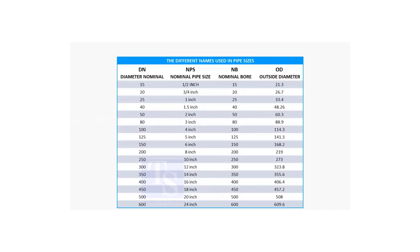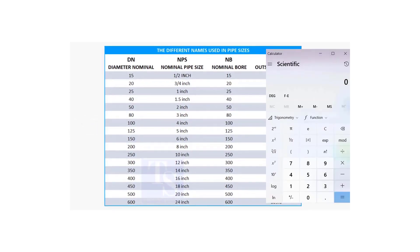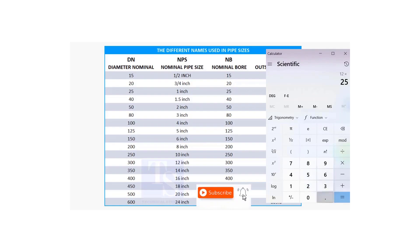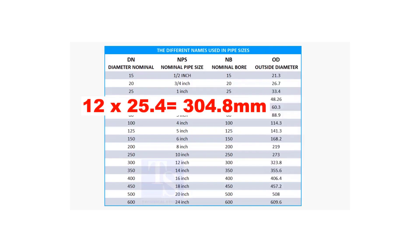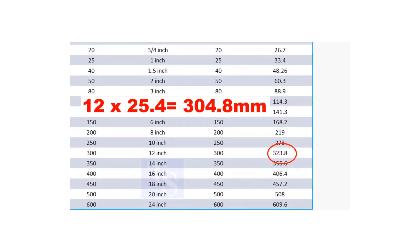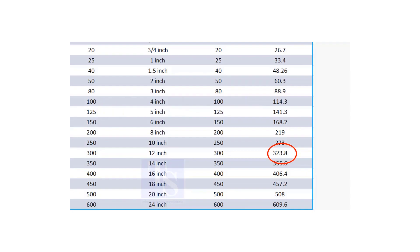Let us check this. To calculate the OD of a 12 inch pipe, multiply 12 by 25.4. The answer is 304.8 millimeters. But the actual size is 323.8 millimeters.